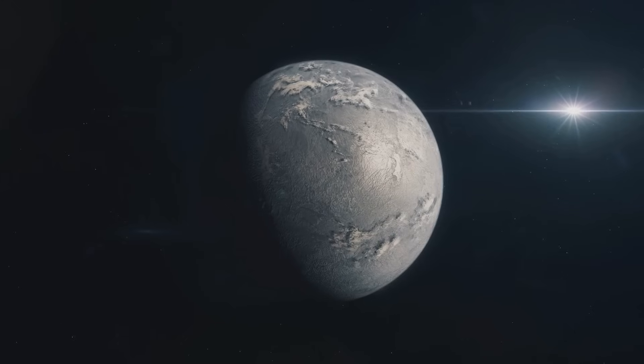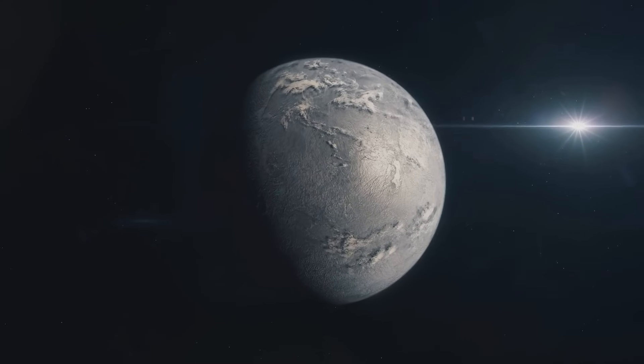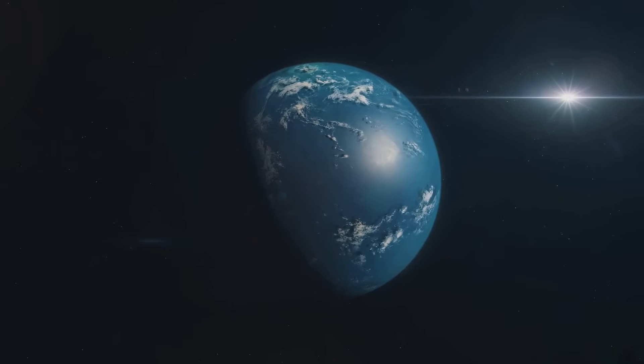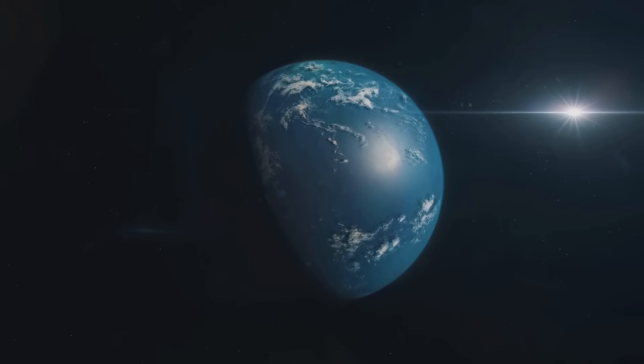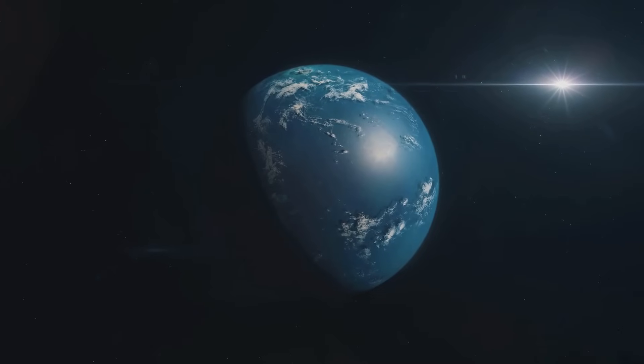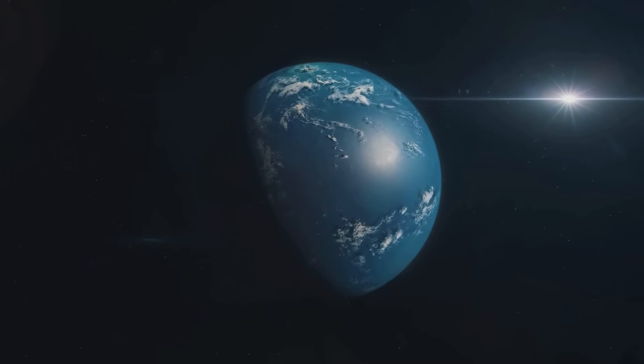This suggests it could have a similar climate to our own planet. Last but not least is the fascinating TRAPPIST-1 system. This system, located about 40 light-years away, contains seven Earth-sized planets. Three of these planets are in the habitable zone, and all seven could potentially have liquid water.